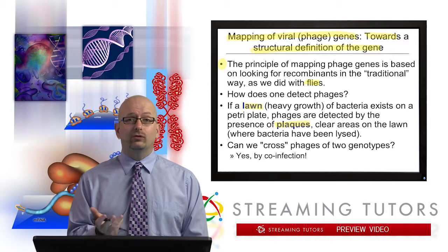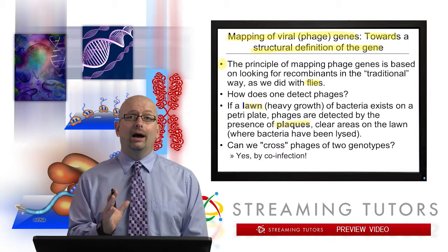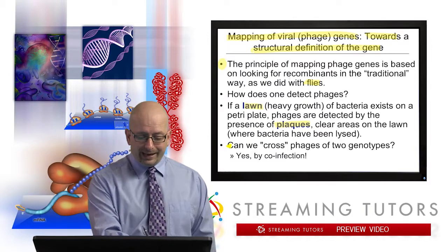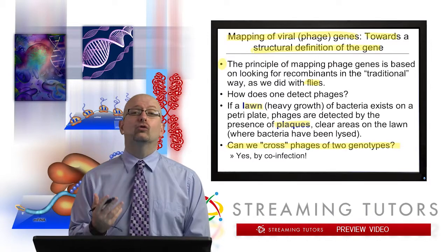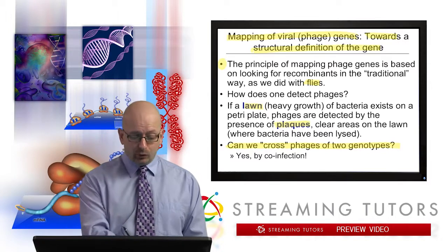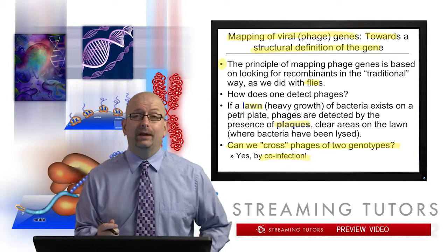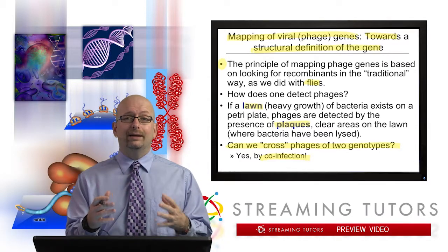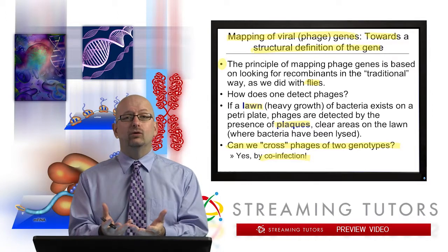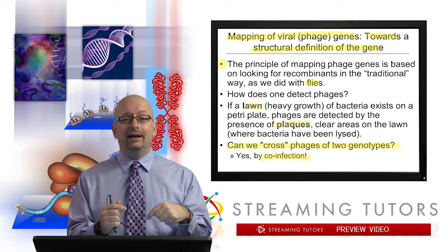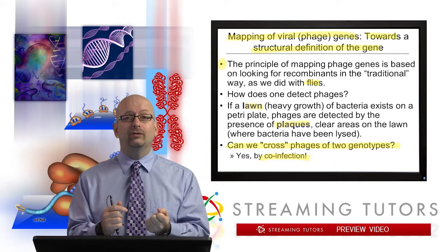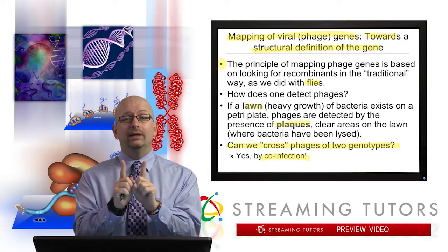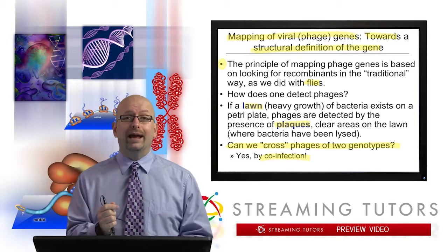Viruses don't have sexual reproduction, which is usually required for this type of mapping. But we can, in a very real sense, cross phages of two different genotypes by doing a process called co-infection. All co-infection means is that the bacterial cell being attacked is going to have phages of two different types put in there. The phage DNA of one type gets into the cell, and then phage DNA of another type also gets in, the two DNAs can co-mingle, and crossing over can occur.